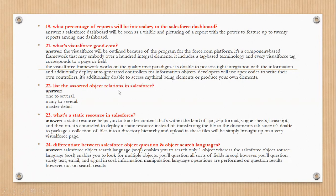The next question is: list the object relationship types in Salesforce. The relationship types include one-to-many, many-to-many, and Master-Detail relationships.